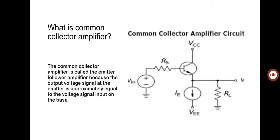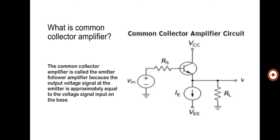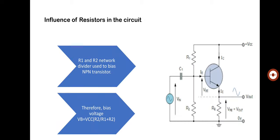We call it the emitter follower amplifier. At the base terminal there is a biasing voltage VB, which is considered the input voltage, and at the emitter terminal there is a biasing voltage VE, which is considered the output voltage. The collector terminal is common between input and output — between the base input and the emitter output there is a common terminal called the collector terminal. This is why it is called the common collector amplifier circuit.